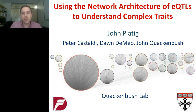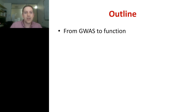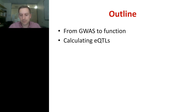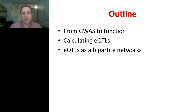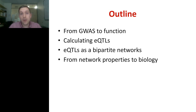I'd like to first acknowledge my collaborators, Peter Castaldi and Don DiMaio, who are both faculty at Harvard Medical School and Brigham and Women's Hospital, and of course my advisor, John Quackenbush. As an outline for the talk, I'll discuss some of the challenges going from GWAS to function — genome-wide association studies — then talk about calculating EQTLs, and then our attempts at modeling EQTLs as bipartite networks. Finally, I'll try to go from network properties to biology, which I think is probably the most challenging aspect: which aspects of network topology are actually most informative to the biology of the data you're working with.